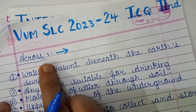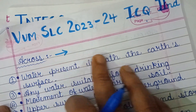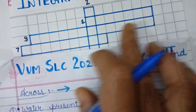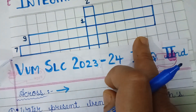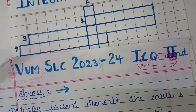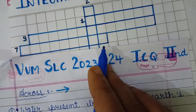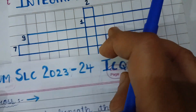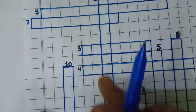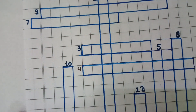Some questions are filled across in the crossword in horizontal rows, and some questions are filled downward in vertical columns.